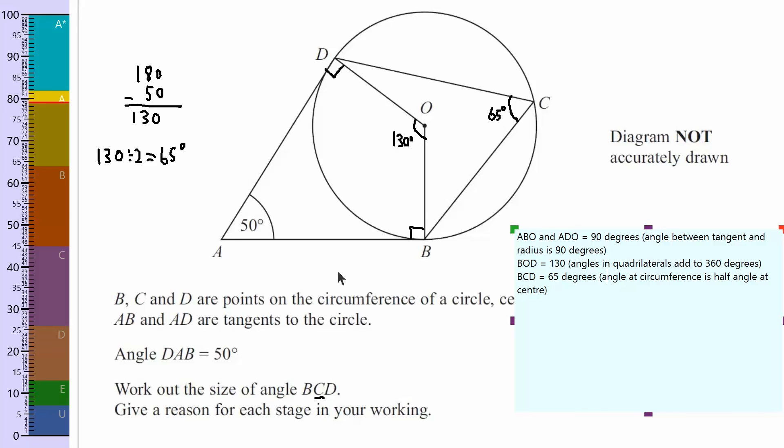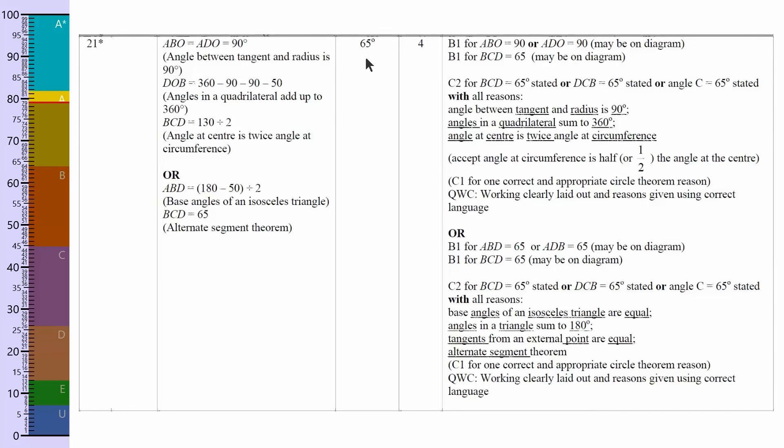There are other ways of getting the right answer, however, this will give you full marks. So if we have a look at the mark scheme, we can see the answer gives us 65, and they've done it the same way as us there. They've also used alternative segment theorem there. But it gives you the key words they're looking for. So I think, as long as you use these three brackets here, you're absolutely fine, which is the ones we've done. Angle between tangent and radius, 90 degrees. Angle at the centre is twice the angle at the circumference. And that's the actual circle theorem, so they might want it that way around. And it says, except angle at circumference is half the angle at the centre, so they're happy with that.